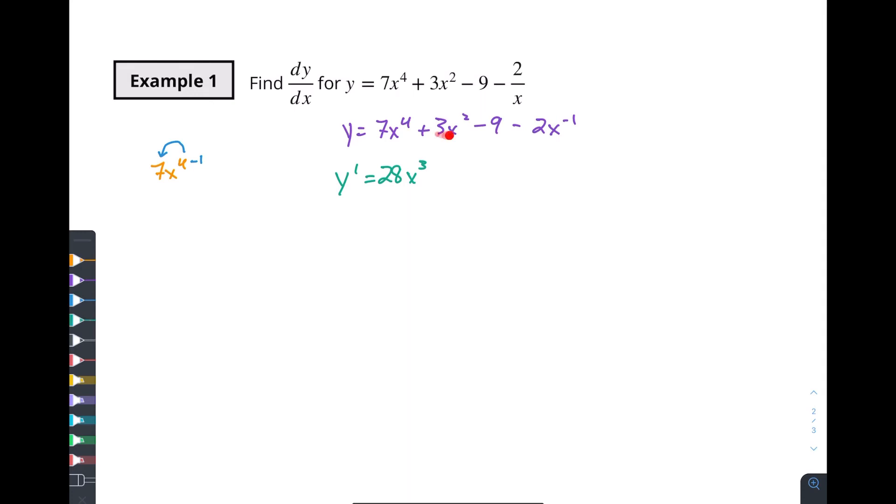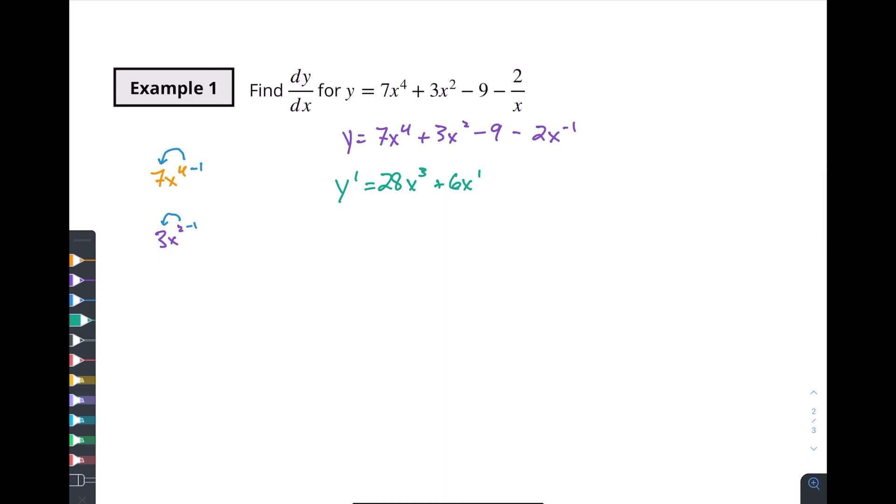I'm going to do the same thing with my 3x squared. Let's look at 3x squared. I'm going to bring this down, and I'm going to subtract 1. So that's going to be plus 6x to the first power. Now I've got minus 9. The derivative of any constant is 0. So I could do minus 0. You probably wouldn't do that on any normal thing. We never write plus or minus 0, but we'll leave it in there just so we can map out everything that's happening.